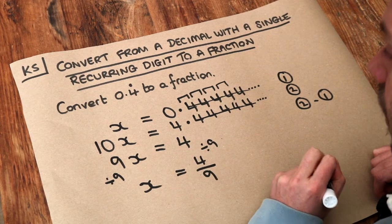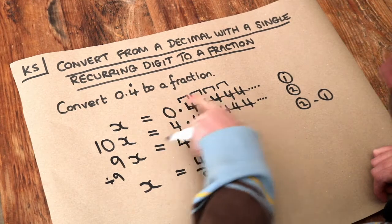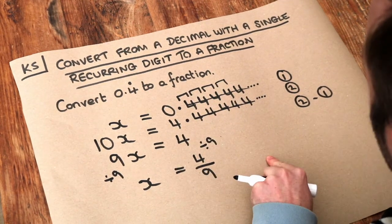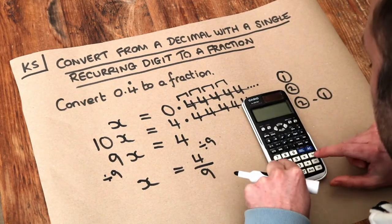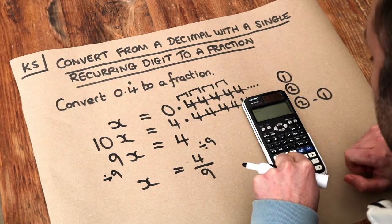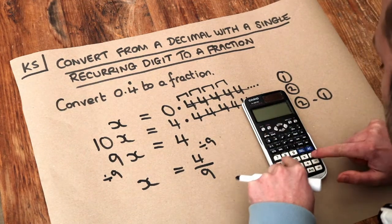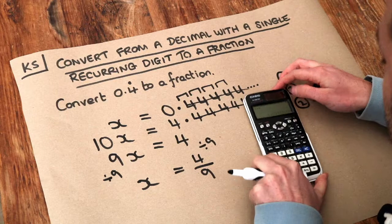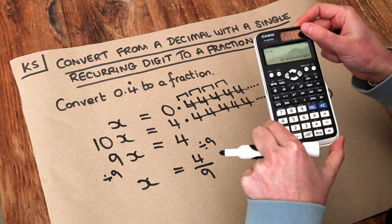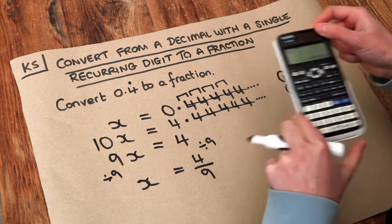And there we go. We've managed to convert x from its original recurring decimal form to fractional form. If we just check on our calculator, we do 4 divided by 9, press equals, it will say 4 ninths. But then if you press the SD key, it will actually show 0.4444444. So we know that we've got it right.